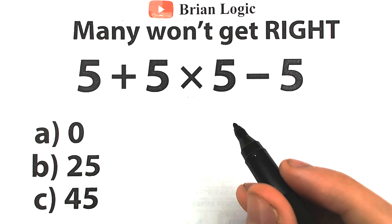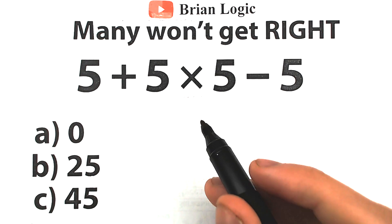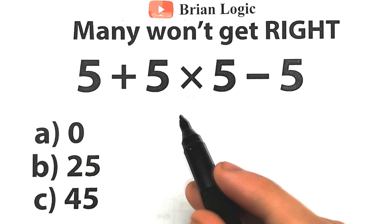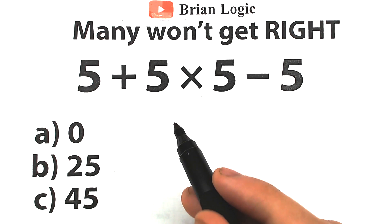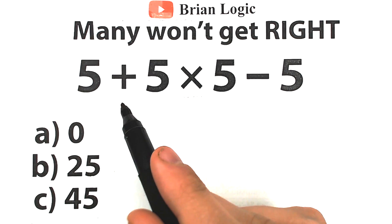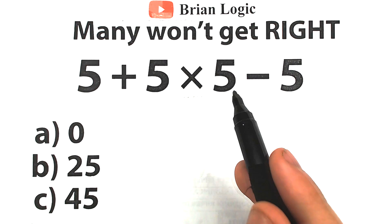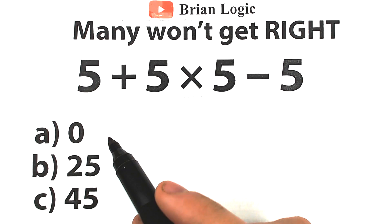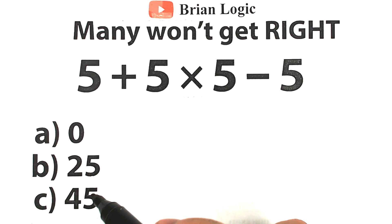Hello everyone and welcome back to my channel BrainLogic. Today we have a really interesting challenge, so I think a lot of you are going to be able to figure this math problem out. It's not that difficult. The problem is 5 plus 5 times 5 minus 5, and we want to get this down to one value. Right here we have three options: option A, B, and C.